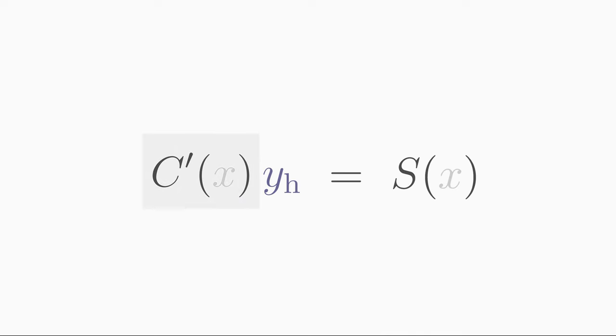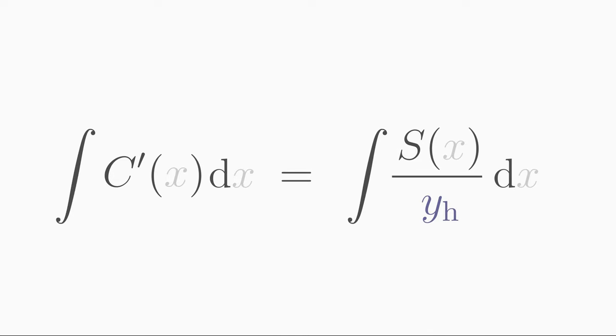You can now rearrange the equation for the unknown coefficient c'. Now, to eliminate the derivative c' we have to integrate both sides over x. We cannot integrate the right side concretely because s is different depending on the problem. Therefore, we leave the right side unchanged.